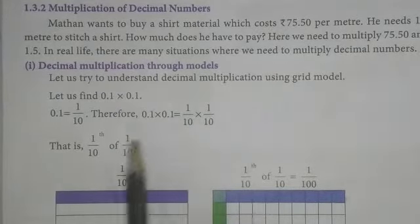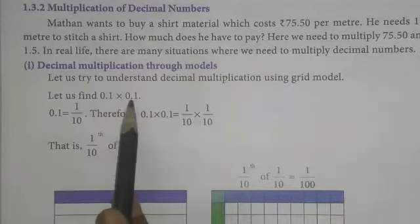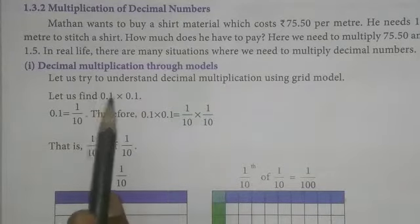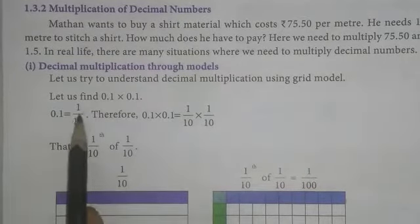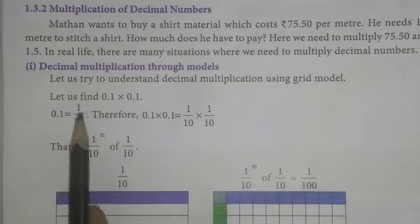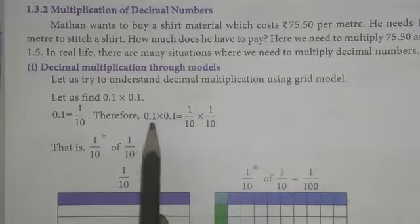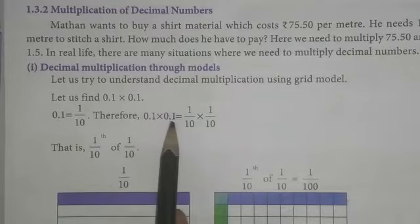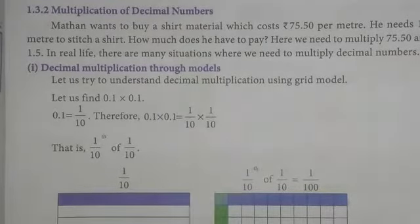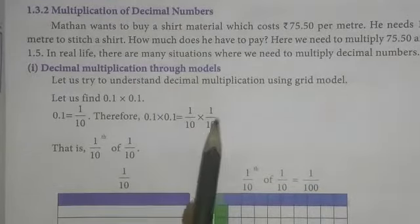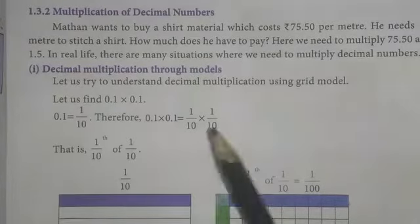First one: multiply 0.1 into 0.1. Here 0.1 is the same as 1 by 10. Therefore 0.1 into 0.1 is equal to 1 by 10 into 1 by 10, which means 1 by 10th of 1 by 10.